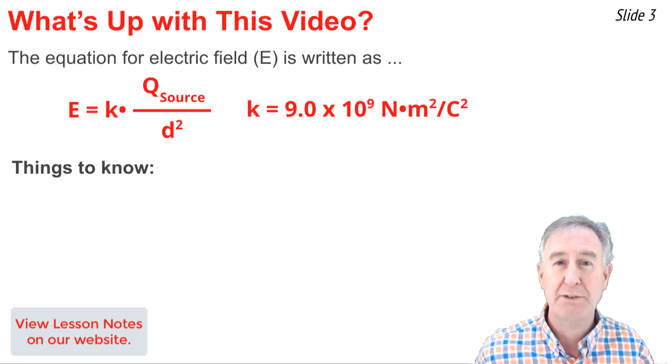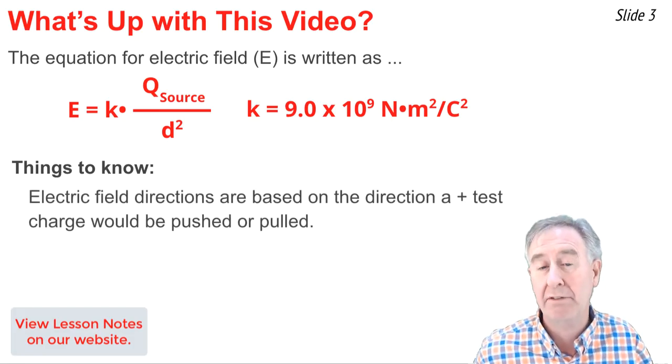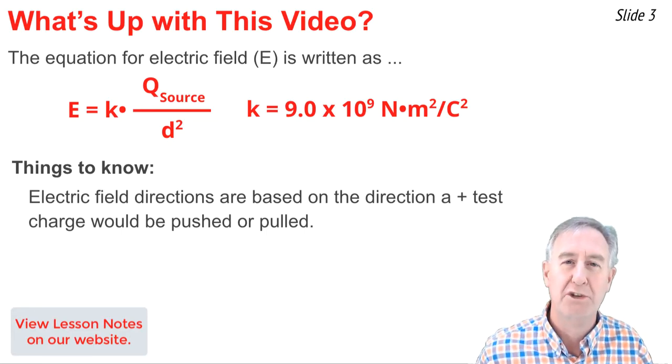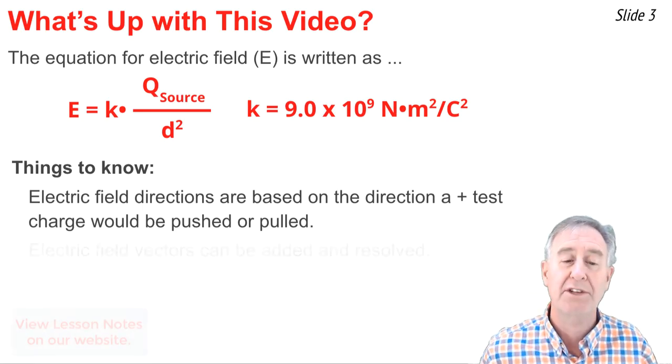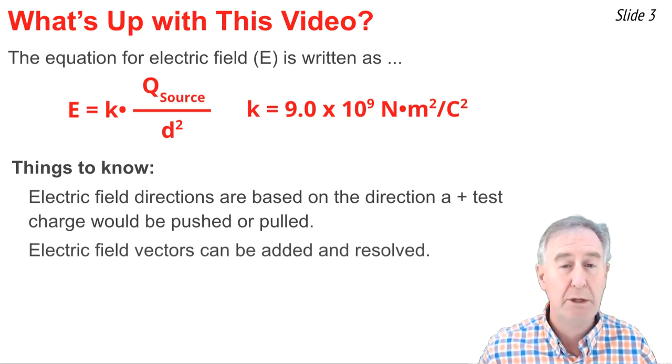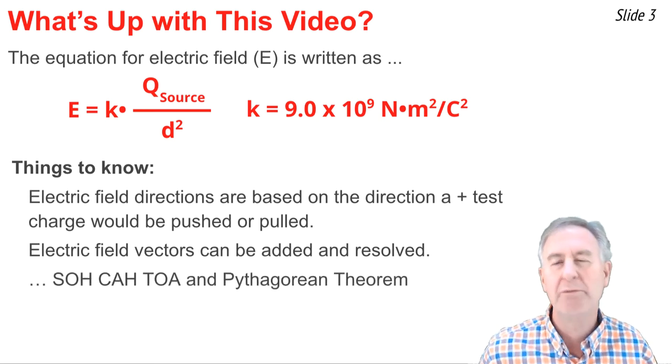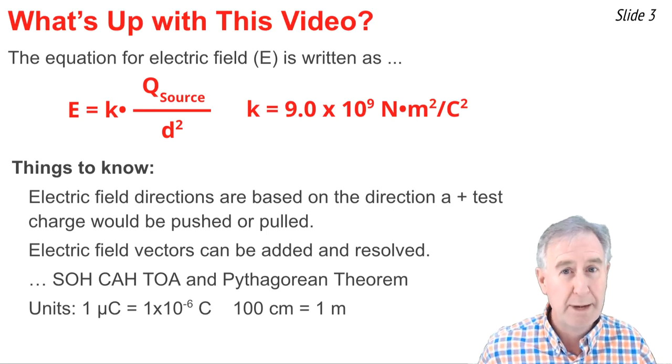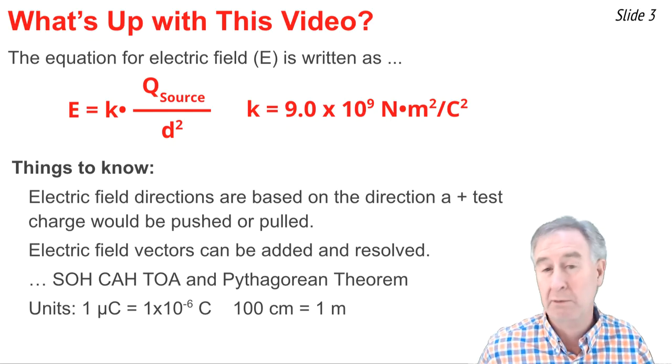Now, in order to be successful in this video, there's a few things that we need to know. First of all, we need to understand that the electric field is a vector, and its direction is defined as the direction that a positive test charge would be pushed or pulled when placed at any given location in space. Second, electric field vectors can be added and they can be resolved using SOHCAHTOA and Pythagorean theorem. Third, you need to know a few things about units: one microcoulomb is equal to 10 to the negative 6 coulombs and 100 centimeters equals 1 meter.